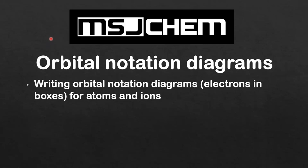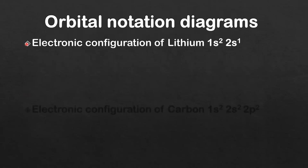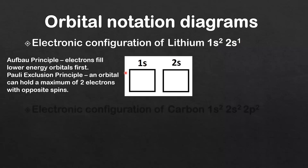This is MSJChem and in this video I'm going to look at orbital notation diagrams — that's writing orbital notation diagrams or electrons in boxes for atoms and ions. We'll start by looking at the electronic configuration of lithium, which is 1s2, 2s1.